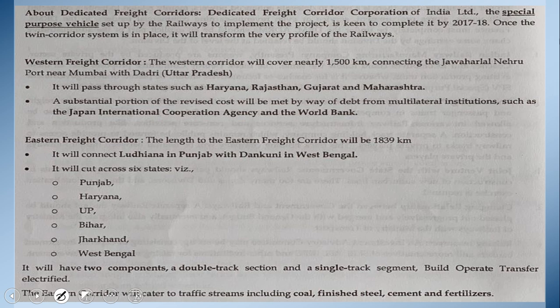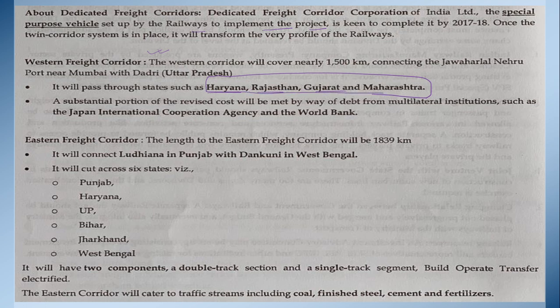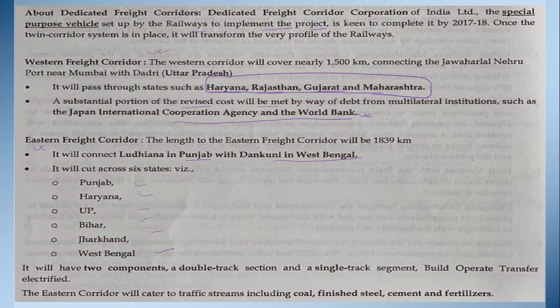The Dedicated Freight Corridor Corporation of India was set up by railways to implement the project. The Western Freight Corridor passes through Haryana, Rajasthan, Gujarat, and Maharashtra, with substantial revised costs met through debt from multilateral institutions such as the Japan International Cooperation Agency and World Bank. The Eastern Freight Corridor from Ludhiana, Punjab to Dankuni, West Bengal passes through six states: Punjab, Haryana, UP, Bihar, Jharkhand, and West Bengal. It has two components — a double-track section and a single-track segment under the BOT model — and will cater to traffic including coal, finished steel, cement, and fertilizers.